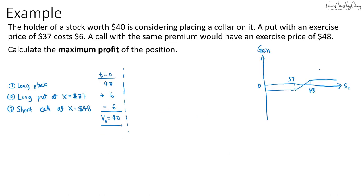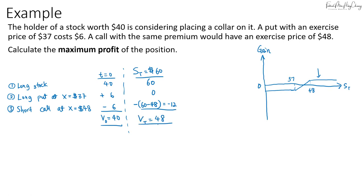The profit is maximum for the collar when the spot price is above the strike of the call, which is $48. For example, if the stock price goes to $60, the put is out of the money, and the short call payoff is $60 minus $48, but being a short position that's negative $12. So the value of the collar is $48 — the exercise price of the call — and the maximum gain is $48 minus $40, which is $8.